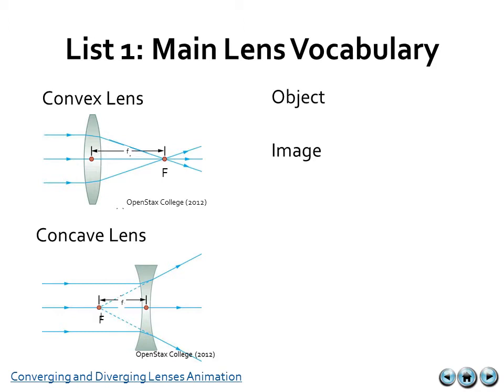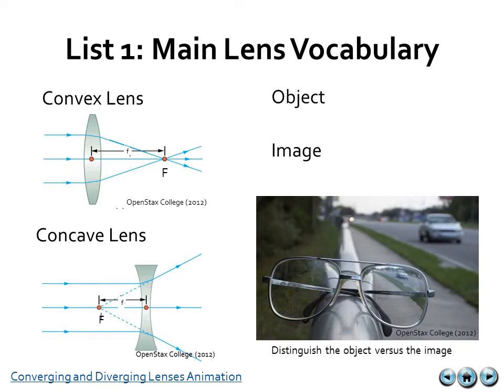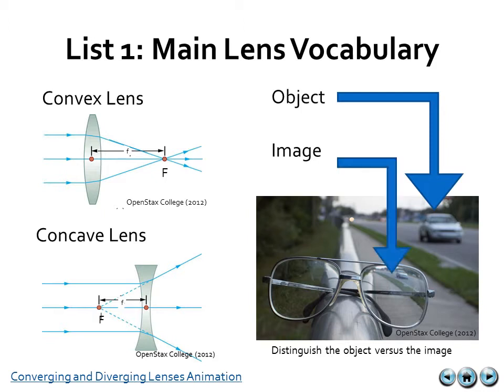As well, our other basic vocab involves the object and image. If you look at the photo on the screen, we have a car approaching this pair of glasses sitting on a railing. The object is that car back in the distance, whereas the image we see through that lens can be seen right there inside that lens. In addition, you can view the link at the bottom of the screen for another animation of converging and diverging lenses.